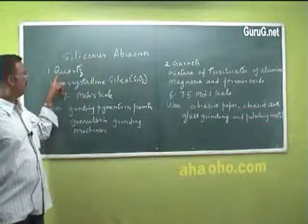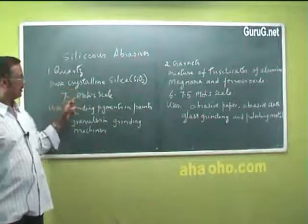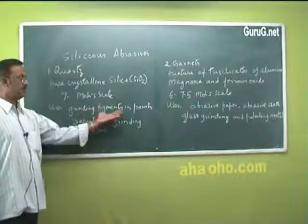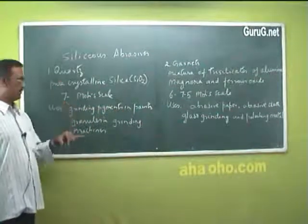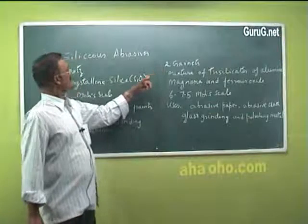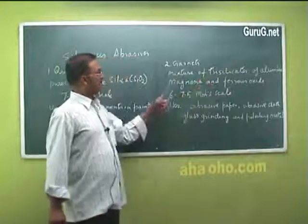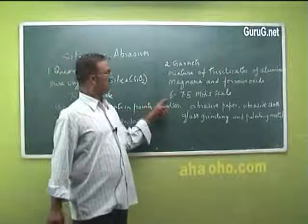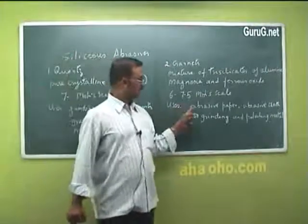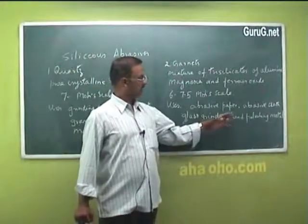There are two important siliceous abrasives. The first is quartz, which is pure crystalline silica, SiO2, with a hardness of 7 on the Mohs scale. It is mainly used for grinding pigments in paints and as granules in grinding machines. The second siliceous abrasive is garnet, which is a mixture of tri-silicates of alumina, magnesia, and ferrous oxide. Its hardness ranges from 6 to 7.5 on the Mohs scale, and it is used in abrasive paper, abrasive cloth, and for grinding and polishing metals and glass.